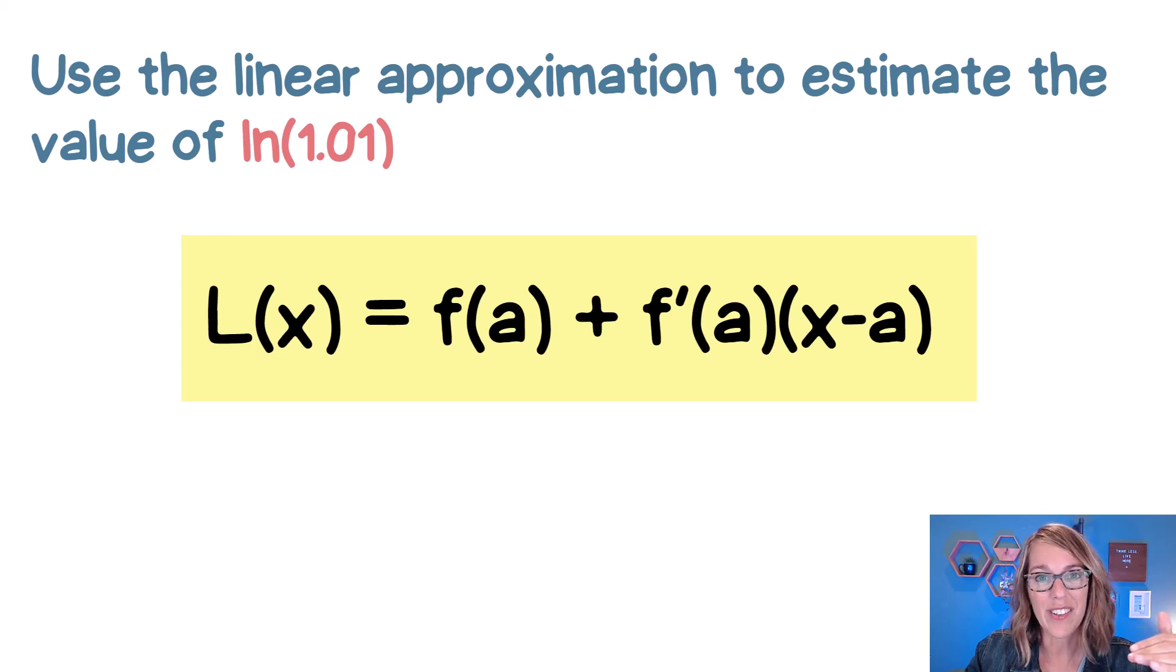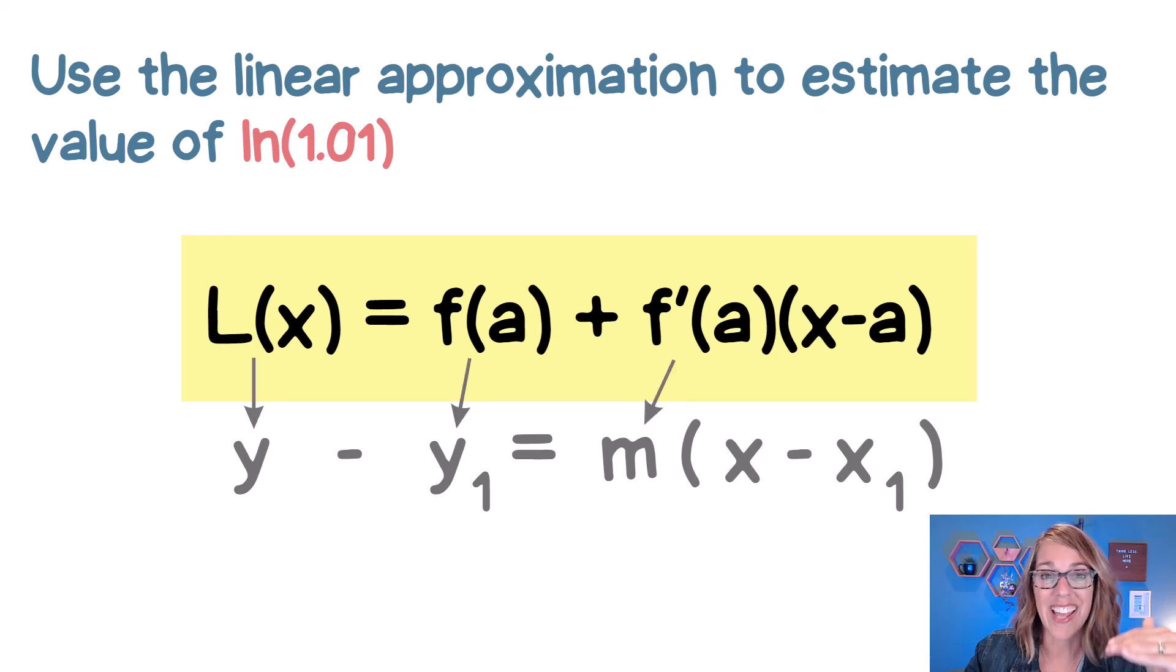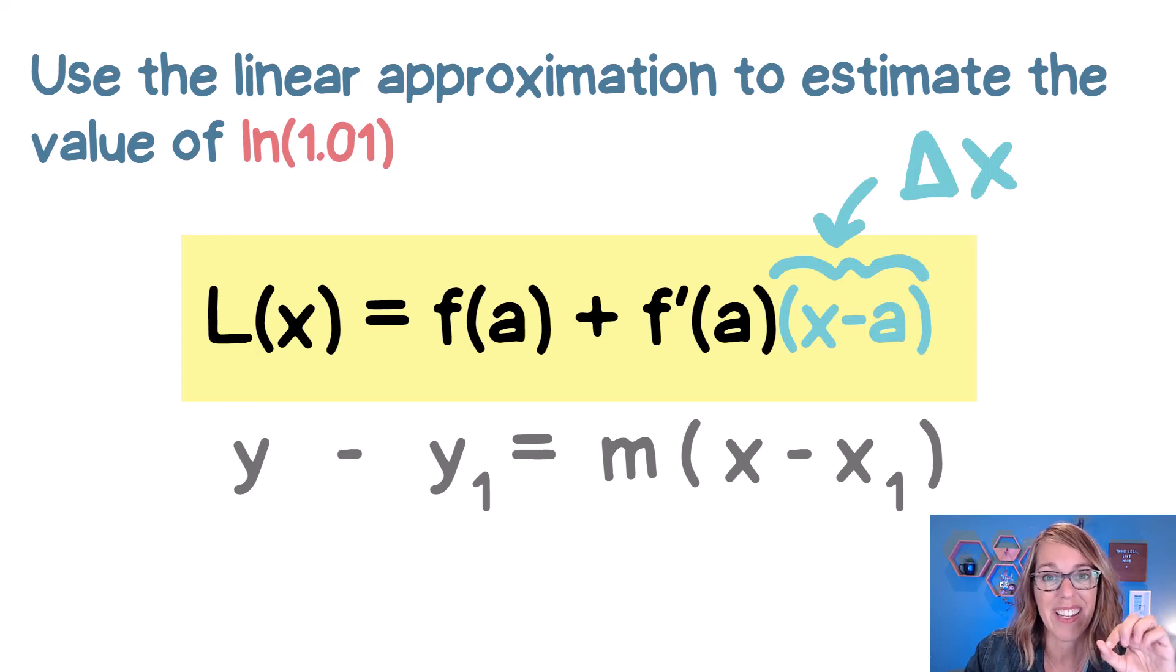So this is the linearization formula, but it's actually just the equation of a tangent line. Take a look at that point-slope formula where L and F are our Y values and F' is our slope. Now this X minus A on the end, you may see that in your homework or in your class lectures as a delta X. Either way, let's go ahead and identify each piece that we need to find this function L of X.